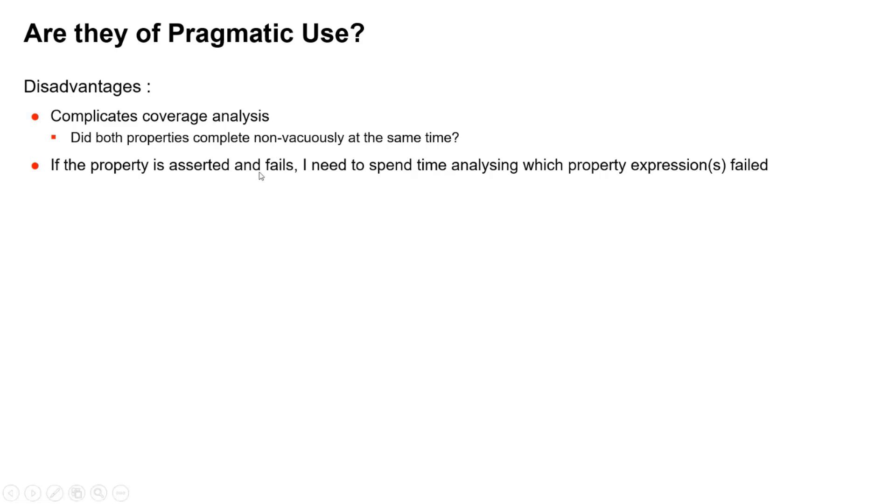If the property is asserted and it fails, I need to spend time analyzing which one failed. It could be both failed, of course. In formal, if the property is asserted and passes you don't really know whether the other property expression is passing vacuously or non-vacuously. So there's more risk there if you don't specify your coverage correctly.